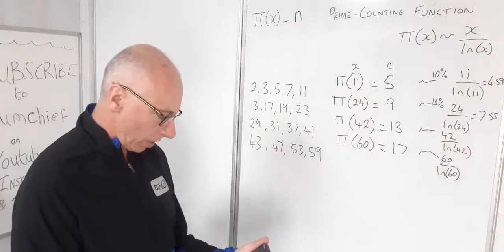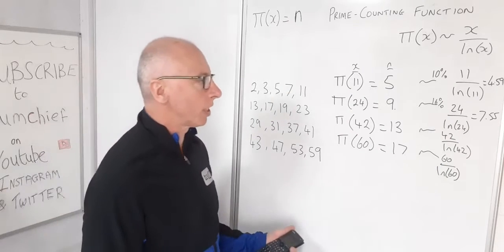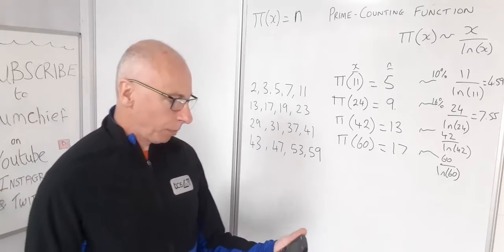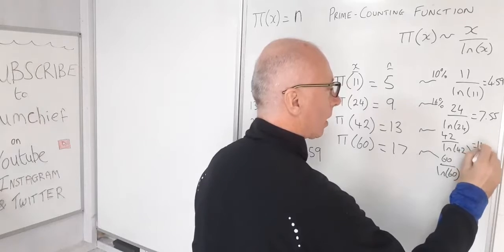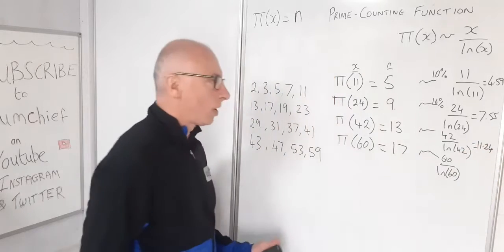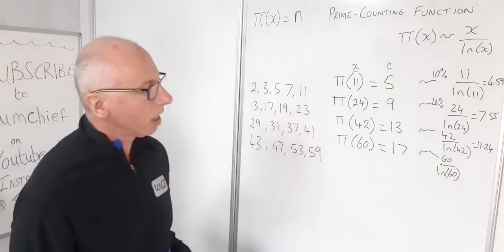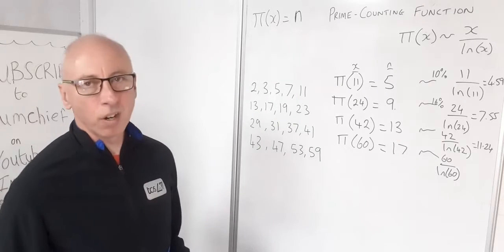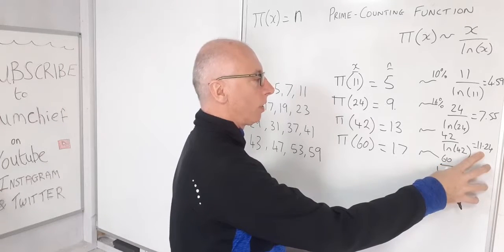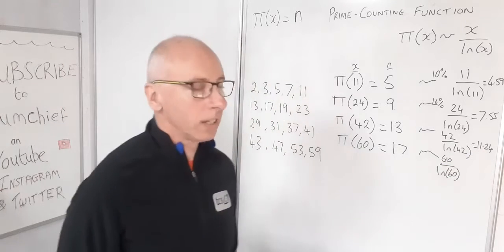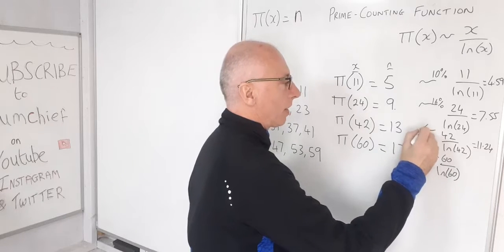Then we'll try 42 over the log of 42. Bear in mind this is the natural logarithm we're interested in. That's going to give me 11.24. These numbers are all to two decimal places. We've got 13 here, so again not too far out but not really very close either. So 1.8 out from 13, a little bit less than 10 percent.